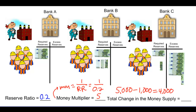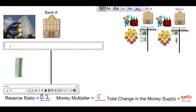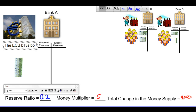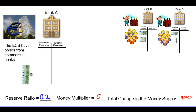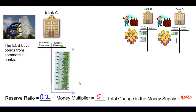This raises the question: what if the initial change in deposits comes not from a private investor, but from an action taken by the central bank? Let's assume that instead of the increase in Bank A's deposits coming from a businessman's business activities, the supply of reserves in Bank A increases because the European Central Bank buys bonds from commercial banks. This is an open market expansionary monetary policy. The supply of excess reserves will increase by €1,000, just as before, and the required reserves will once again increase by 20% of €1,000, or €200, leaving €800 of excess reserves for Bank A to loan out.